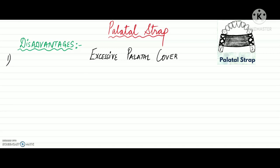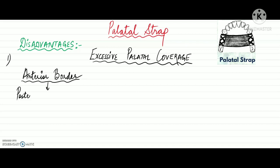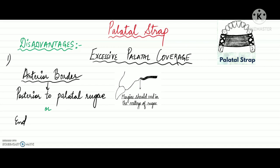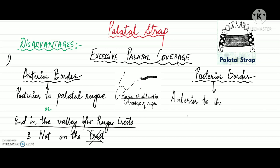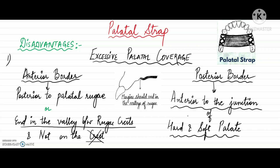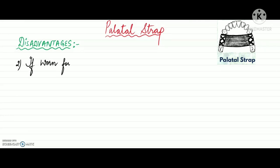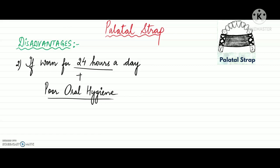Disadvantages of the palatal strap: patients may sometimes complain of excessive palatal coverage, but this is mostly due to improper positioning of the strap border. The anterior border should be positioned posterior to the palatal rugae and should end in the valley between the rugae crests, not on the crest. The posterior border should be positioned anterior to the junction of the hard and soft palate. Another disadvantage is that when the partial denture is worn 24 hours a day with poor oral hygiene, it may predispose the patient to papillary hyperplasia.